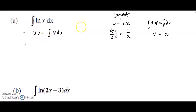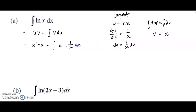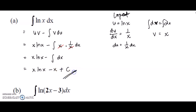We need u and v: u is log x and v is x, so uv = x·log x. For the integral of v·du, v is x and du is (1/x)dx. The x cancels, leaving us to integrate 1 dx, which gives x. Finally, we add constant c because this is an indefinite integral. So the answer is x·log x − x + c.